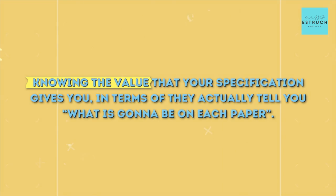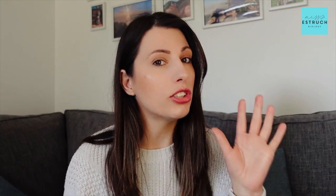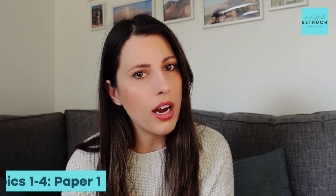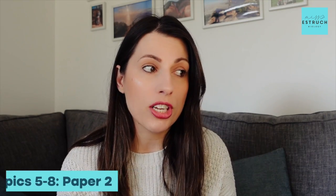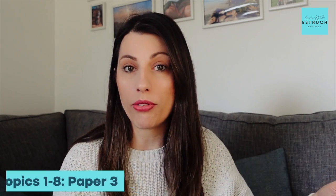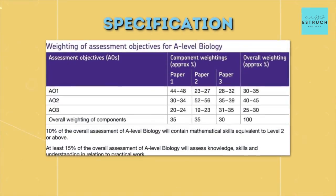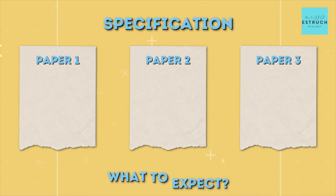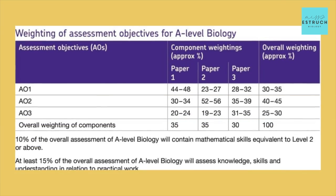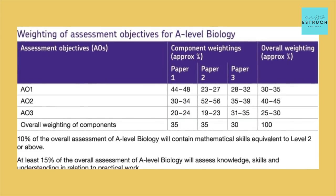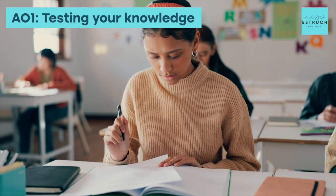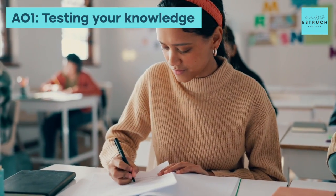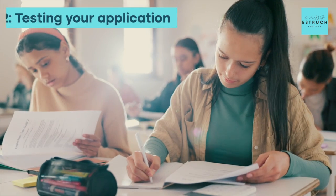This key information is knowing the value that your specification gives you — they actually tell you what is going to be on each paper. And I don't mean just the topics. Most people know that for AQA, topics one to four is Paper 1, topics five to eight is Paper 2, and topics one to eight is Paper 3. I'm talking about the types of exam questions, because on the specification they show you a table where they explicitly say for Papers 1, 2, and 3 what to expect.